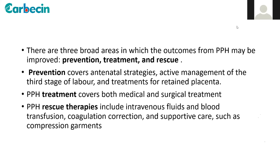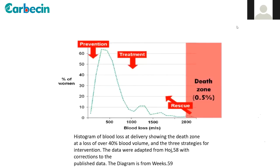There are three broad areas in which outcomes from PPH may be improved: prevention, treatment, and rescue. Prevention covers antenatal strategies, correction of anemia, active management of third stage of labor, and treatments for retained placenta. Treatment covers both medical and surgical approaches. Rescue therapies include intravenous fluids, blood transfusions, coagulation correction, and supportive care such as compression garments or balloon tamponade.